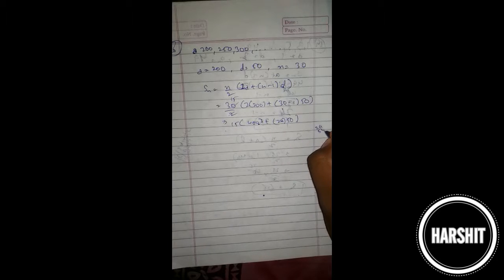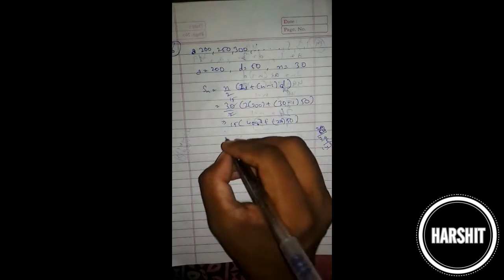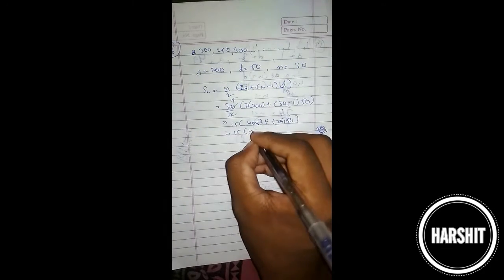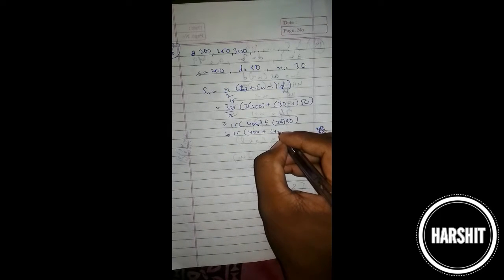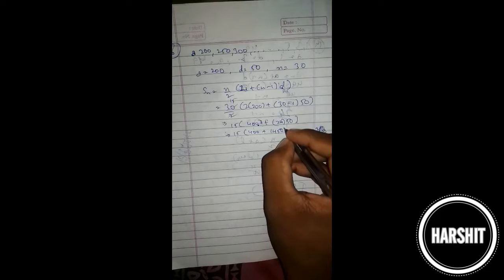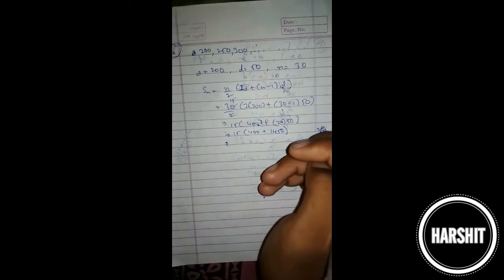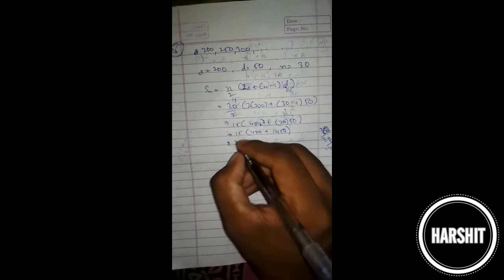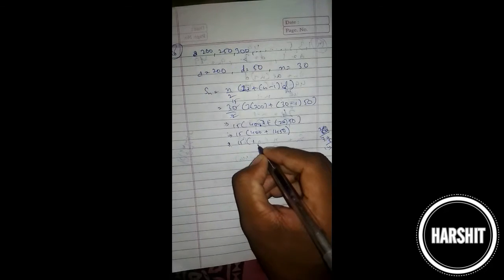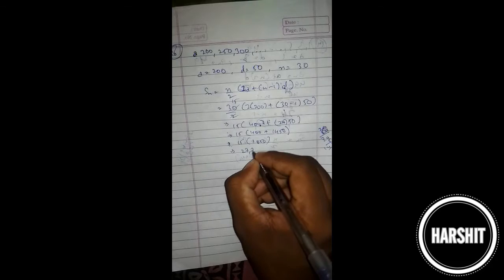29 times 50... 1450... 15 times 400 plus 1450... that's 6000 plus 1450... equals 27,725. So the total penalty will be 27,725.